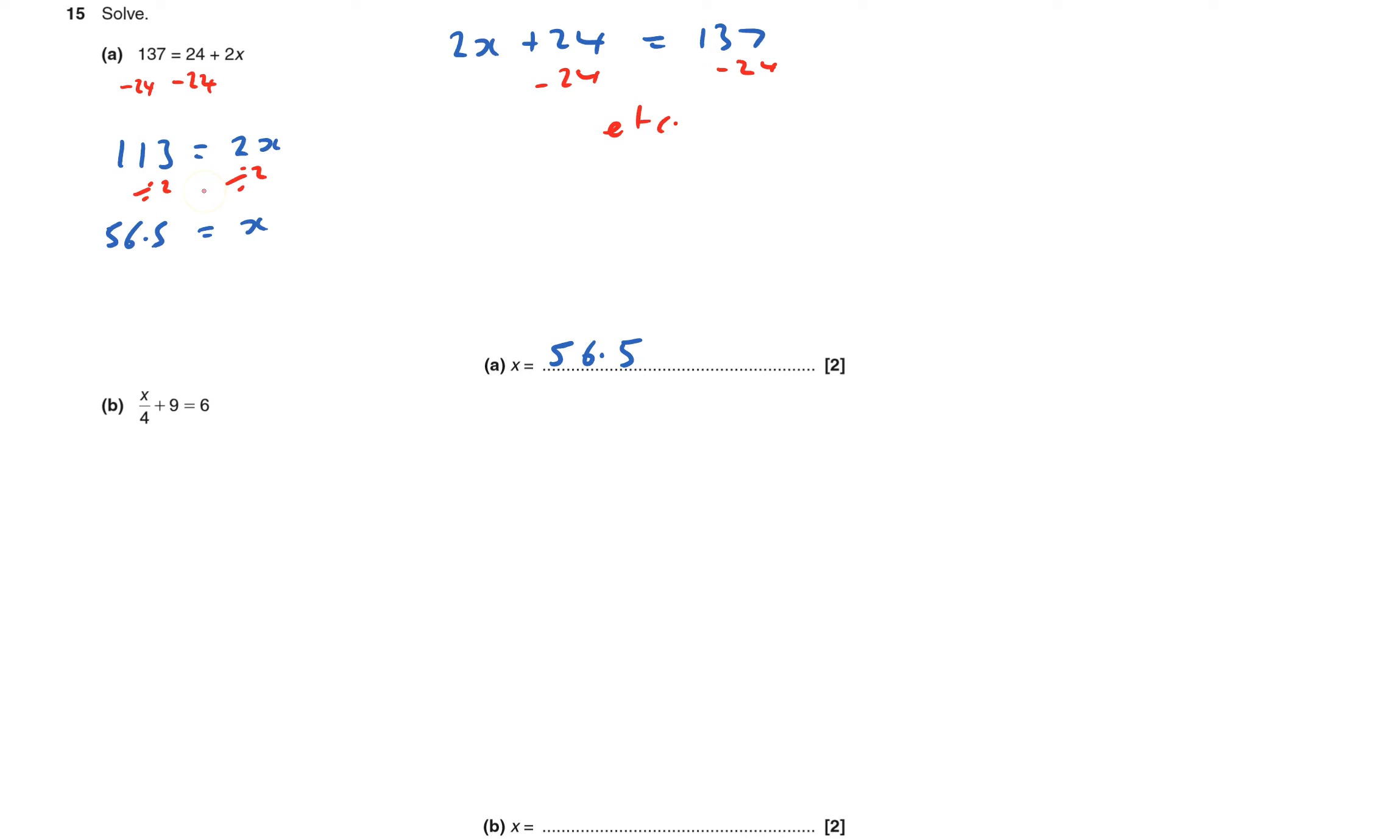The same is here. This one I've got to again undo two things. If I knew what x was, first I would divide by 4 and then I'd add 9, so I'm going to do it in the opposite order. I'm going to get rid of the 9 to start off with.